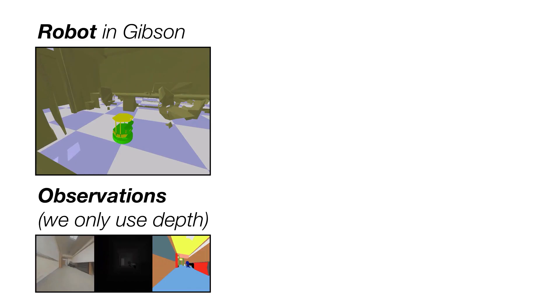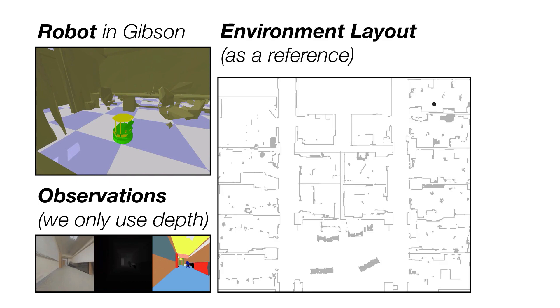We now show two examples of our system navigating long distances. On the left is a video of the robot in Gibson, and below are its observations of the environment. As mentioned before, we only use depth in our work, but show RGB and semantics information to facilitate visualization in this case.